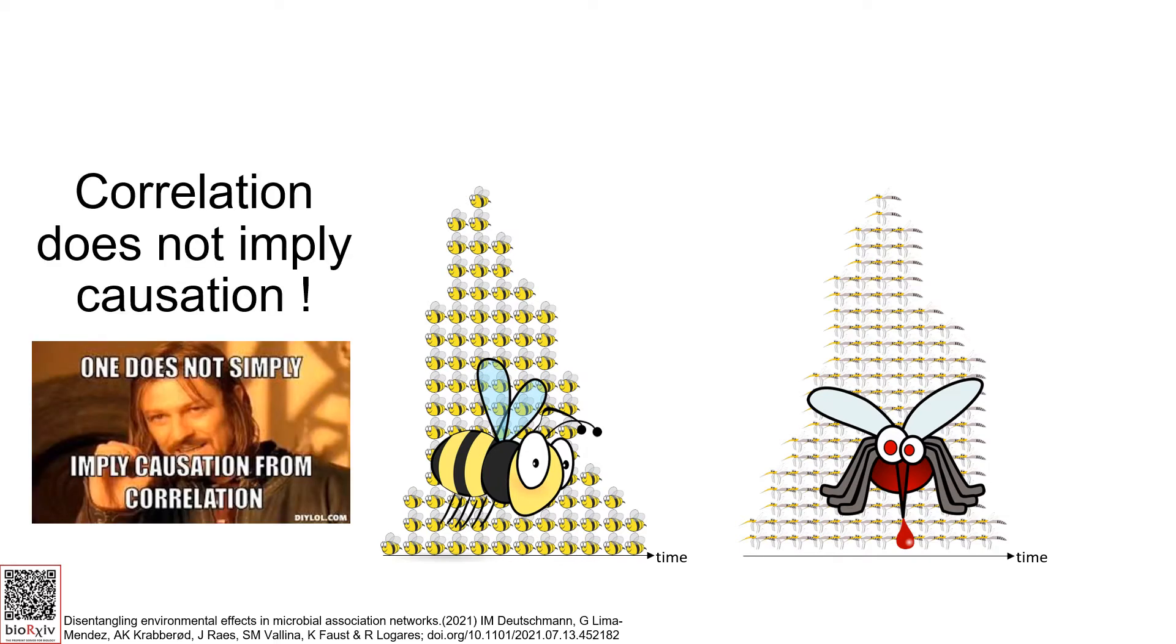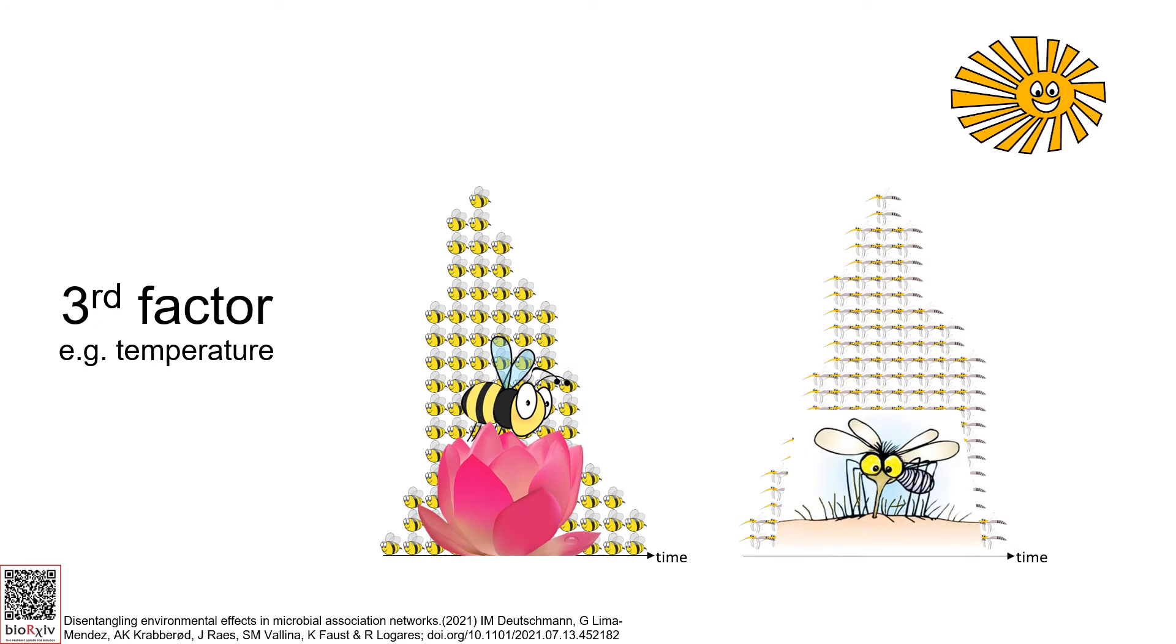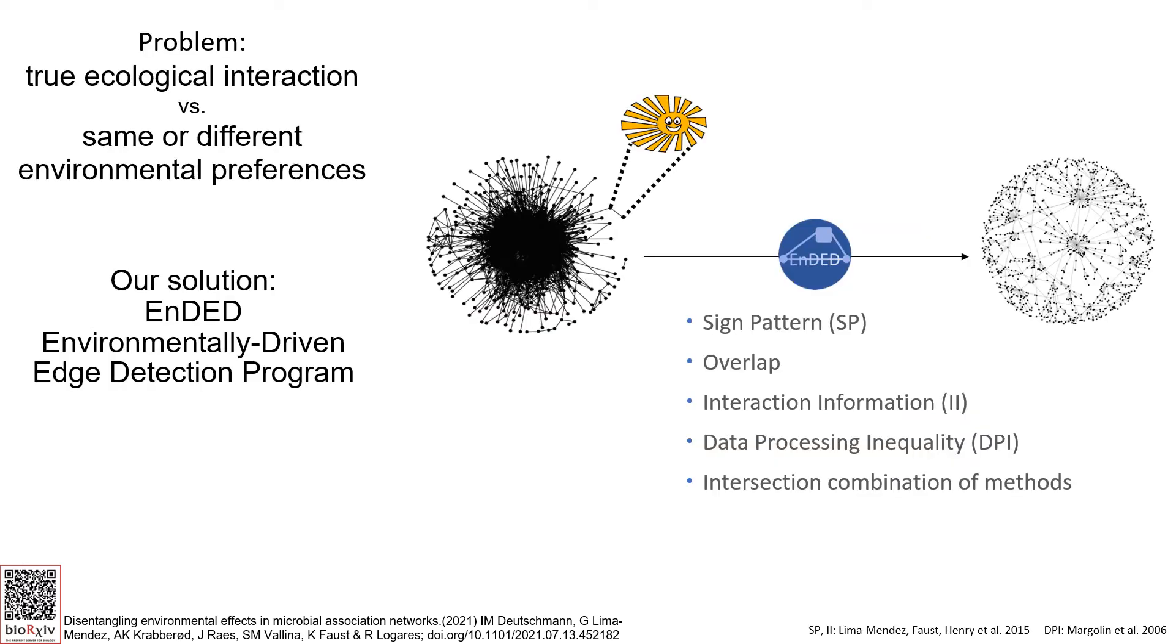However, correlation does not imply causation. Bees and mosquitoes react similarly to a common environmental factor. Such indirect dependencies need to be distinguished from true interactions. For that, I implemented four methods and their intersection combination in a program called Ended.